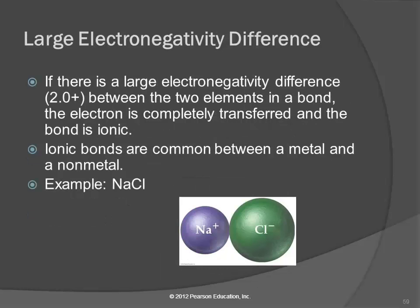If you have a really large electronegativity difference - like between sodium and chlorine where the difference is 2.0 or greater - then it's actually an ionic bond. That's where the one kid's house is so inferior that the electron leaves and permanently stays at the other house. It's not shared at all - 'I'm going to give it to you, you take it, and if I leave town I'm taking that electron with me.' It's an extreme version.